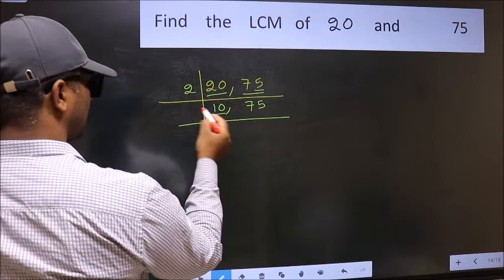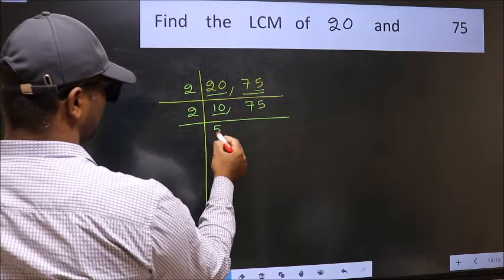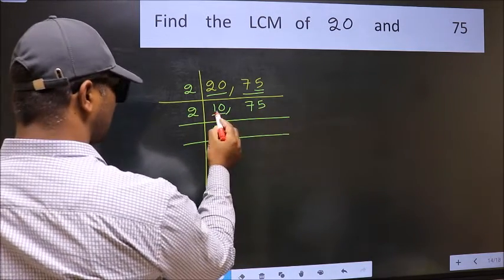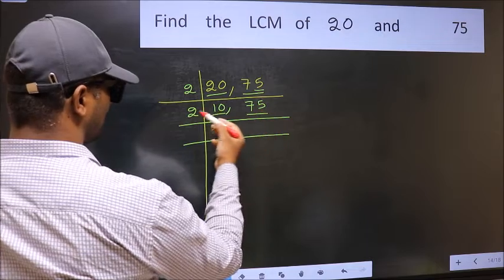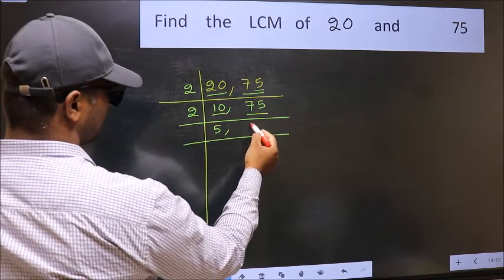Now here we have 10. 10 is 2 fives, 10. The other number 75, not divisible by 2. So you write it down as it is.